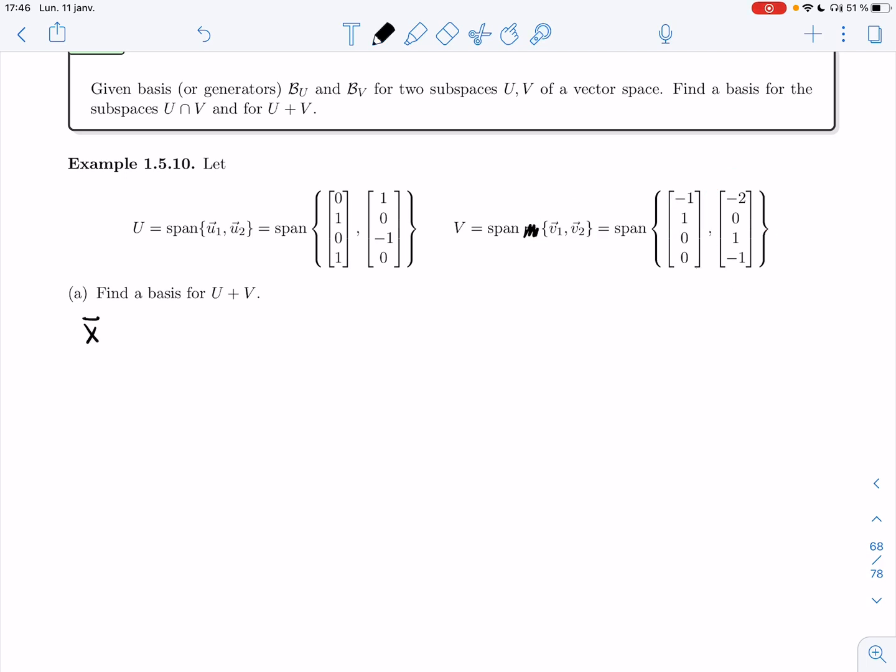So let's look at what it would mean for a vector to be in U plus V. That means that X can be written as a sum where U is in U and V is in V.